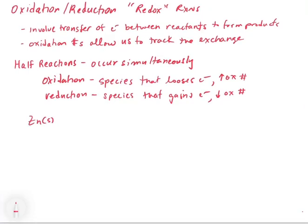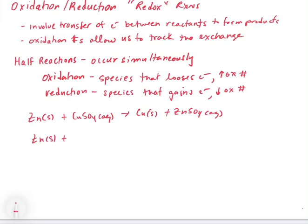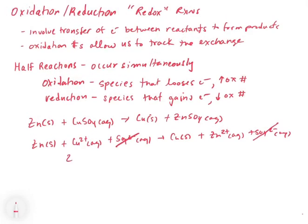Let's take a look at an example. If we take zinc solid plus copper sulfate aqueous, that goes to copper solid plus zinc sulfate aqueous. The first step is to write the net ionic equation. This helps us get rid of the spectator ions so we're not spending time looking at oxidation numbers of things that aren't changing. Zinc solid stays as is. Copper sulfate is aqueous and soluble, so we get Cu2+ aqueous plus SO4 2- aqueous. On the product side, we get copper solid and Zn2+ aqueous plus SO4 2- aqueous. We eliminate SO4 as a spectator, leaving: Zn(s) + Cu2+(aq) → Cu(s) + Zn2+(aq).